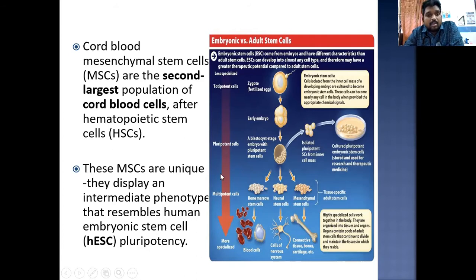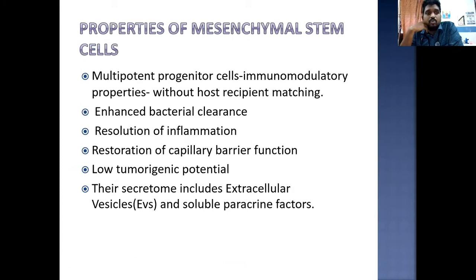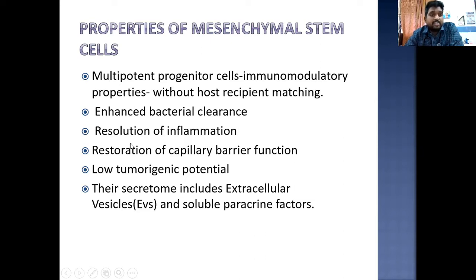These mesenchymal stem cells are unique — they display an intermediate phenotype that resembles human embryonic stem cell pluripotency. The properties of mesenchymal stem cells make stem cell therapy one of the most fascinating areas for further research and therapeutic advancement. These multipotent progenitor cells have immunomodulatory properties without post-recipient matching, enhanced bacterial clearance, help in resolution of inflammation, restoration of capillary barrier function, lower tumorigenic potential, and their secretome includes extracellular vesicles and soluble paracrine factors.